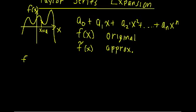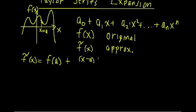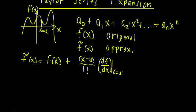Let's write what this approximation is. f-tilde of x equals the original function evaluated at that point, f of a, plus — now we're going to have x minus a (you'll see why in a little bit) multiplied by our constant. In this case our constant is going to look a bit intimidating, but fear not. We have one over one factorial times the first derivative of f with respect to x, and this derivative term is evaluated at x equals a.